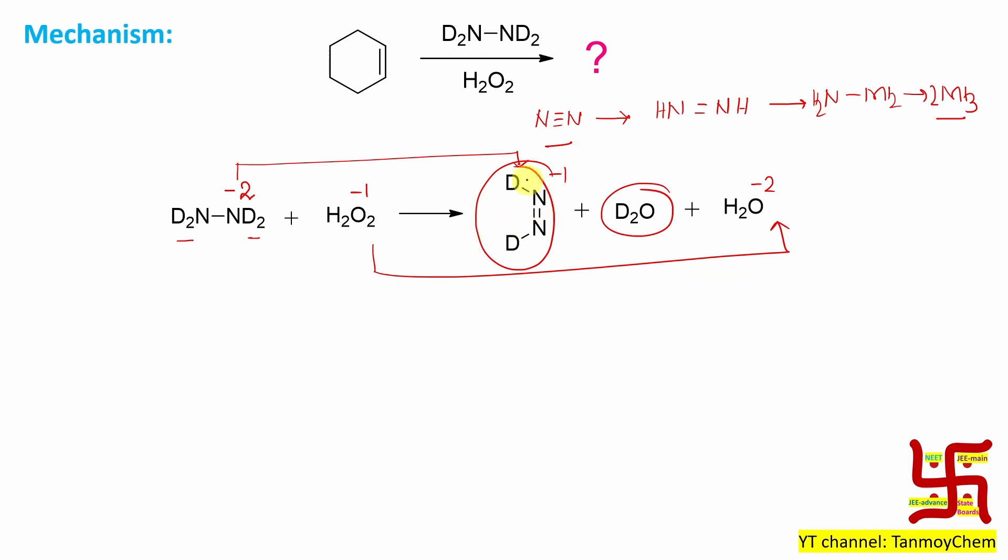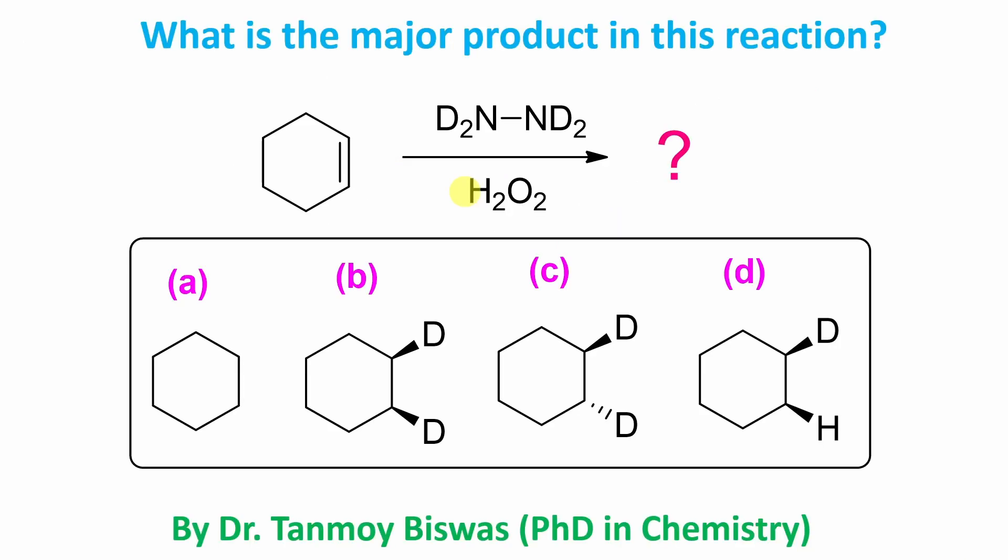So here you understand you have prepared this reagent. It's called diamide and the relative position of the two deuterium atoms. So you can understand the product. In product the deuterium orientation will be same.